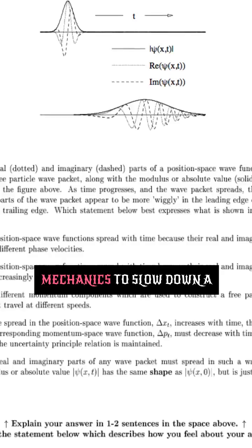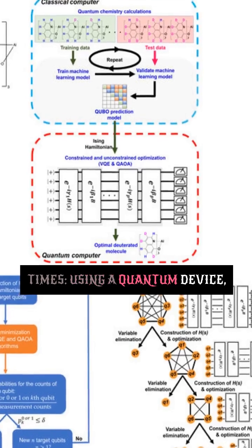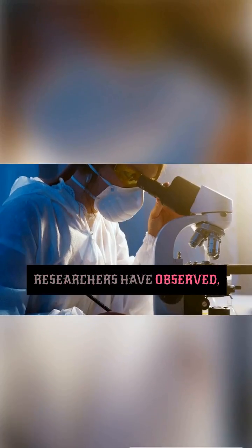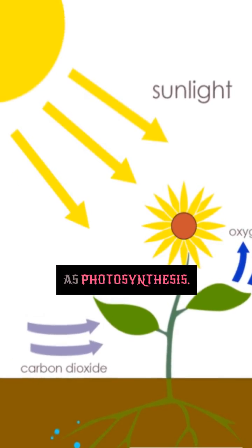Scientists manipulate quantum mechanics to slow down a chemical reaction by 100 billion times. Using a quantum device, researchers have observed, for the first time, a molecular process called conical intersection that is important in reactions such as photosynthesis.